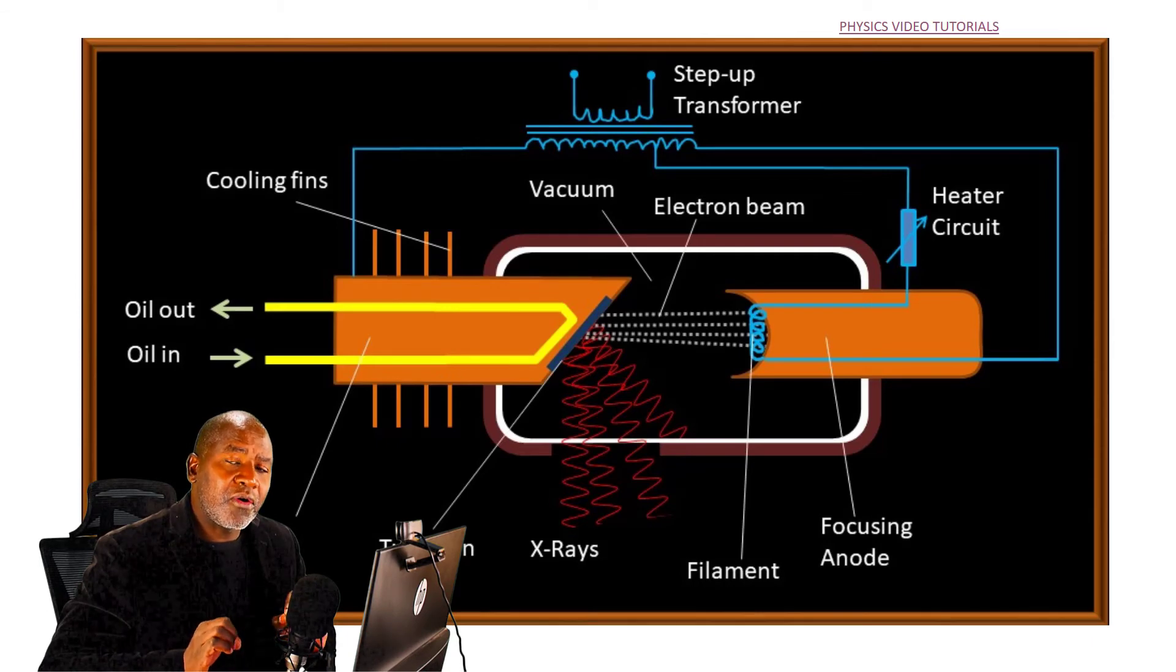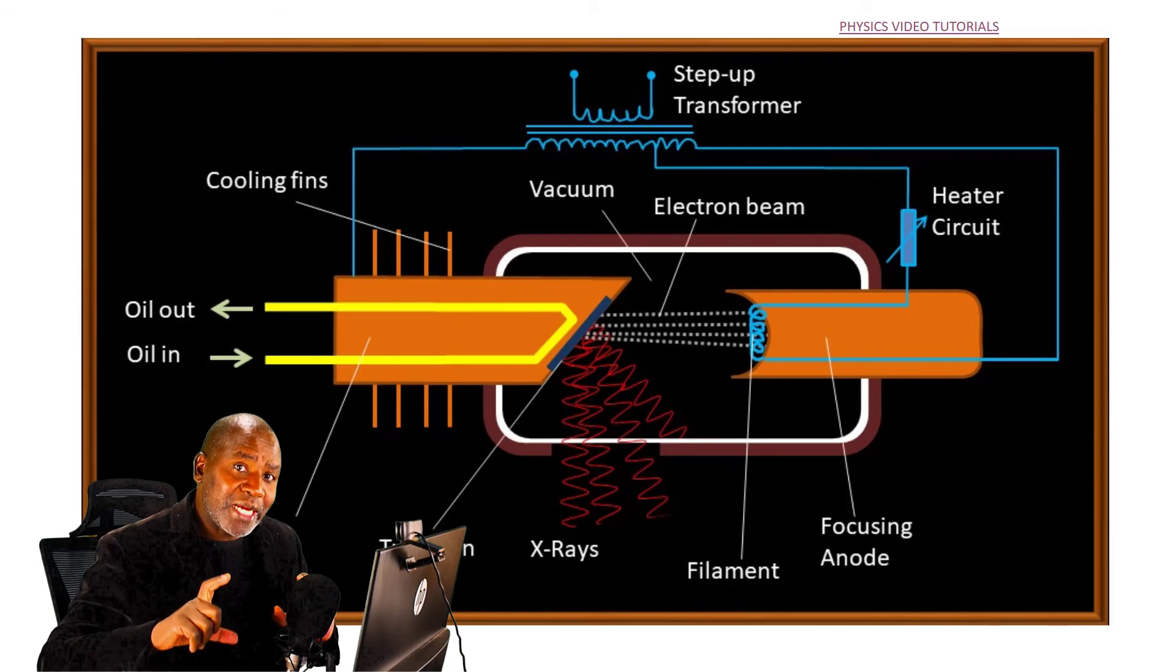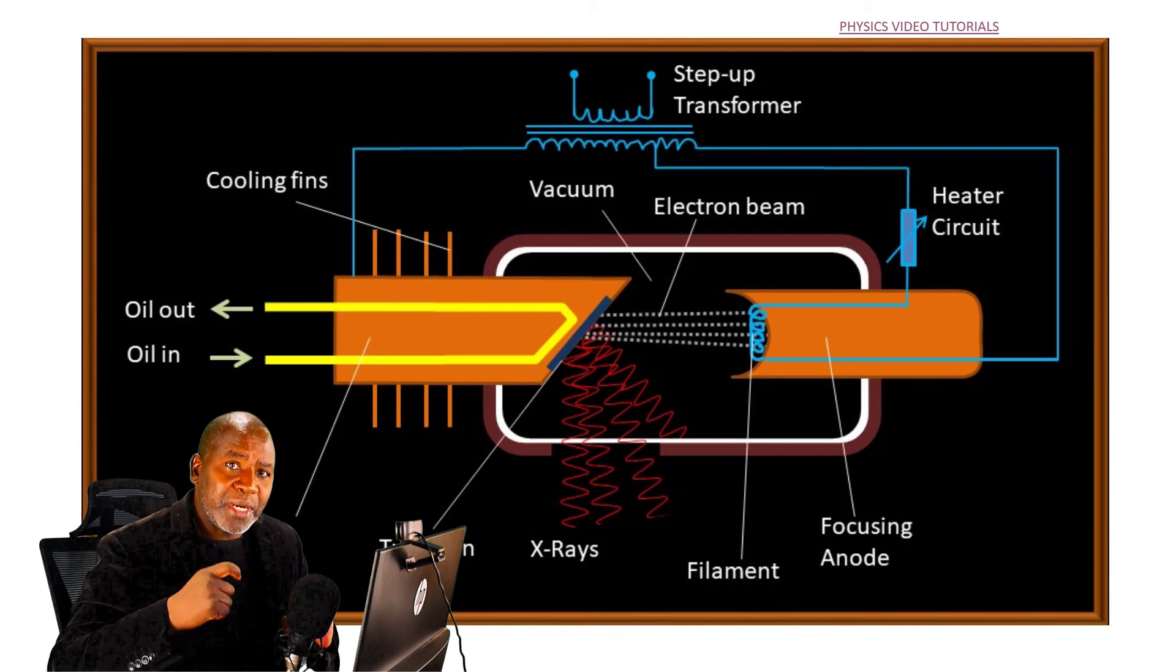This means that the number of electrons which are striking the metal target must also increase. For you to increase the number of electrons striking the metal target per unit time,